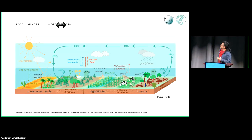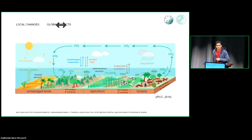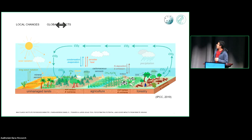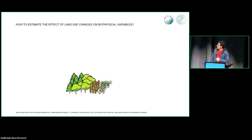Land surface characteristics such as albedo and emissivity regulate the amount of solar radiation and long-wave radiation that is absorbed by the land and re-emitted to the atmosphere. On the other hand, the surface roughness affects the turbulence and exchange of momentum, energy, and different biochemical components between the biosphere and the atmosphere. So ecosystems play a fundamental role in the regulation of climate regimes at local, regional, and global scales. The question is: how do we estimate the effect of land use changes on biophysical variables?